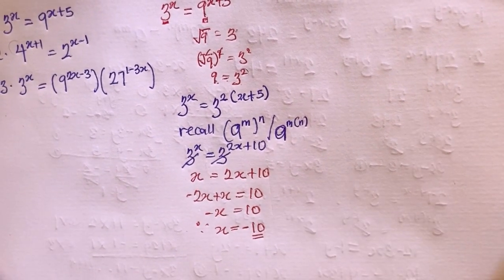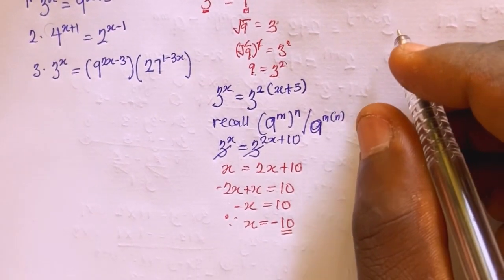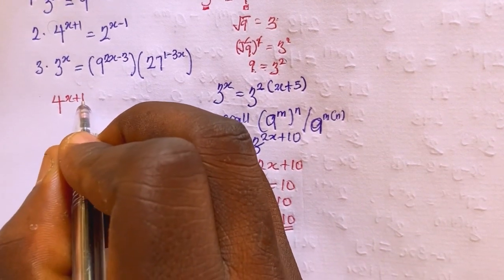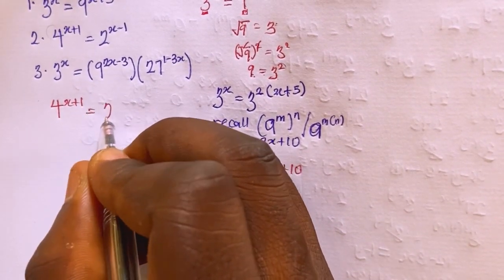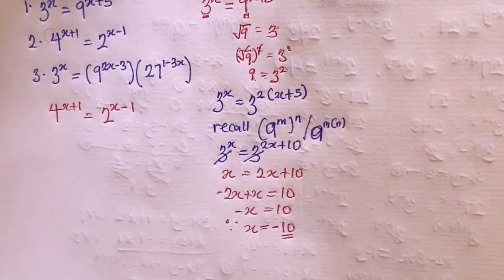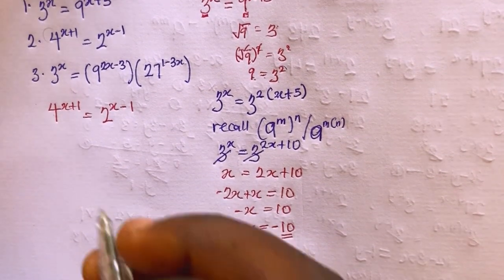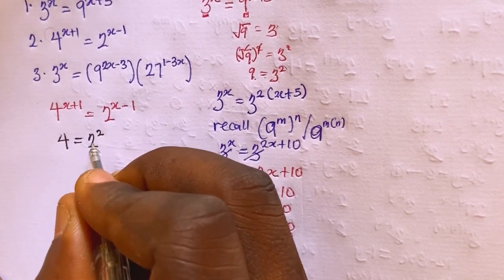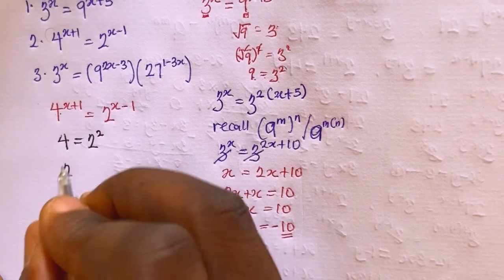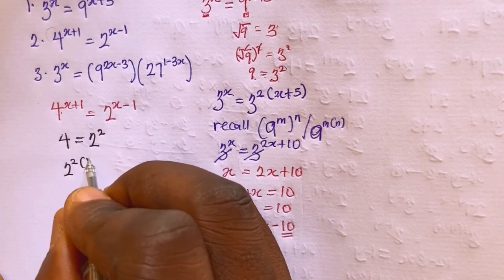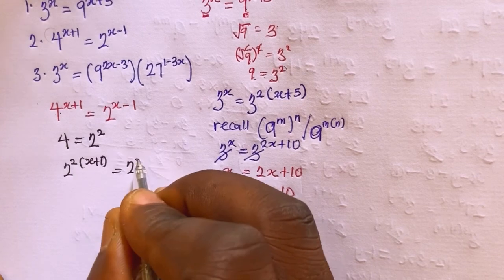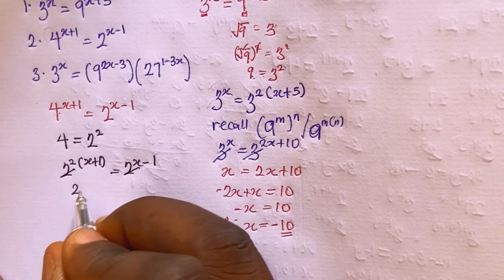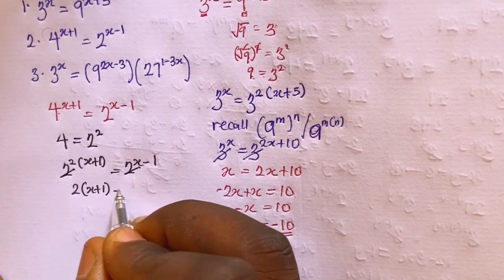Now for the second one: 4 raised to the power x plus 1 equals 2 raised to the power x minus 1. I'll apply the same process — 4 is the same as 2 squared, so I rewrite it as 2 raised to the power 2 into brackets x plus 1, equal to 2 raised to the power x minus 1.